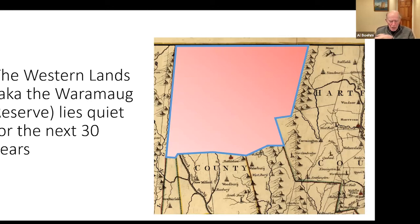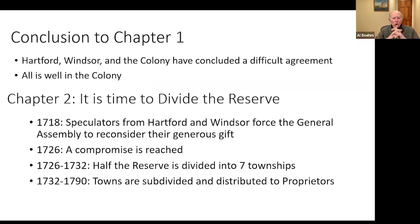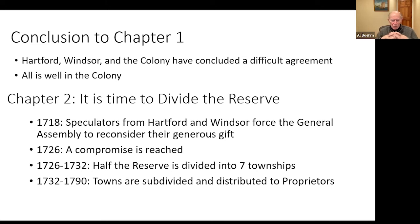The western lands lie quiet for the next 30 years. All is well — Hartford, Windsor, and the colony have concluded a difficult agreement, and Hartford and Windsor are now the proud owners of about 300,000 acres of land. Next week we'll talk about how speculators from Hartford and Windsor forced the general assembly to reconsider that generous gift they had been given. A compromise will be reached, and half the reserve will be divided into townships and parceled out. That's what we'll be discussing next week: what do we do now that we have this land?